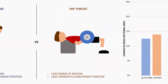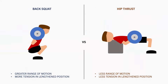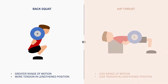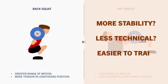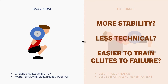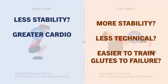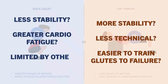So despite squats being a little more lengthened biased, glute hypertrophy was similar to that of the hip thrust. This may be because the hip thrust is more stable, easier to perform, and makes it easier to ensure the glutes are trained to true muscular failure. Whereas squats are a little less stable, a little more fatiguing on the cardiorespiratory system, and may have other muscles limit performance before the glutes.